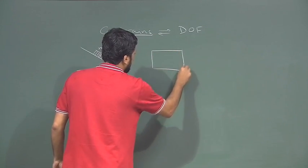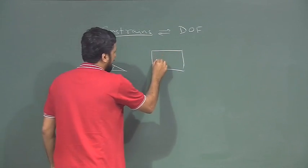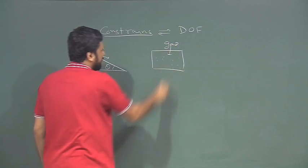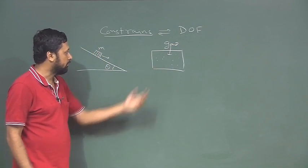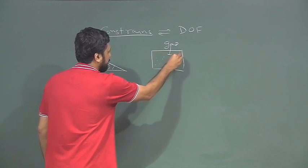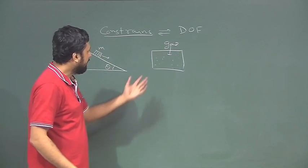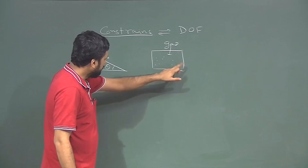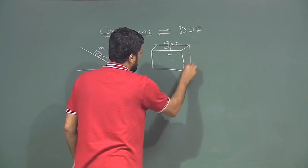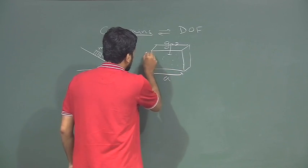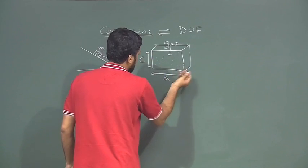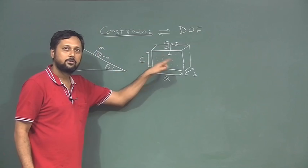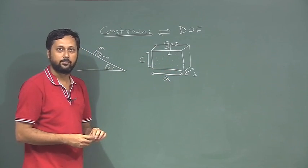Similarly, if we have a closed box with many gas particles inside — this is the particle-in-a-box model, which we have learned in thermodynamics courses — these are also constrained. The particles are allowed to move only within certain lengths. If the box is a 3D box with dimensions A, B, and C, then the gas particles are constrained to move inside those bounds.